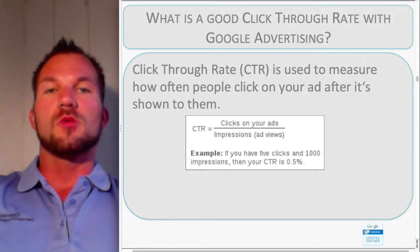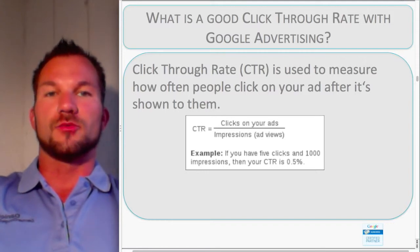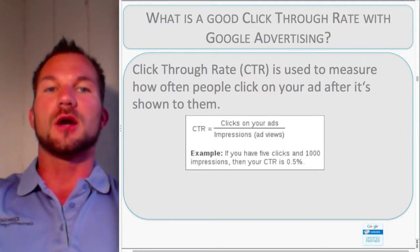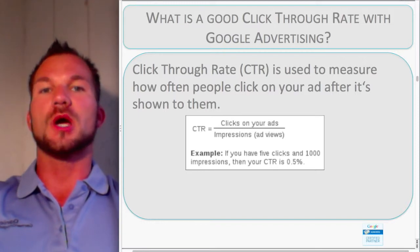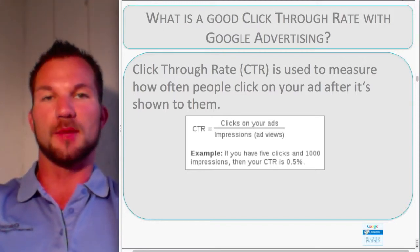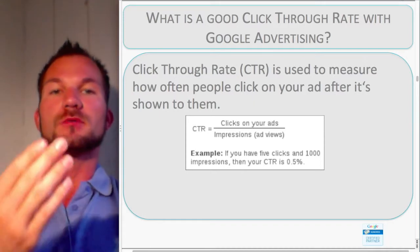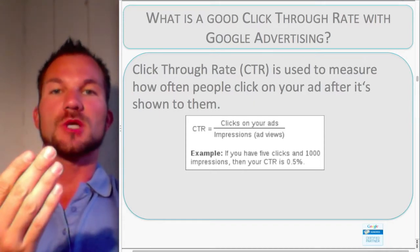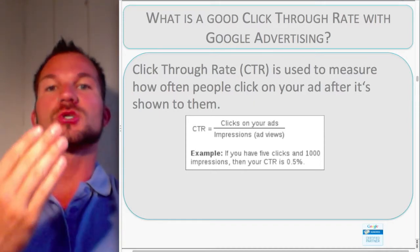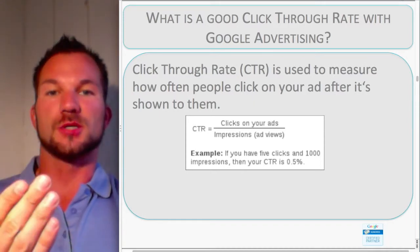First of all, what is a click-through rate? The click-through rate, the CTR, is used to measure how often people click on your ad after it's shown to them. So whenever your advertisement shows up on Google, this is called an impression.